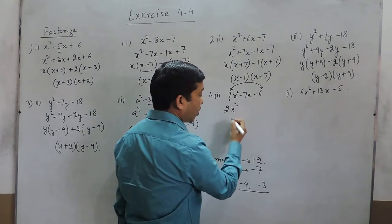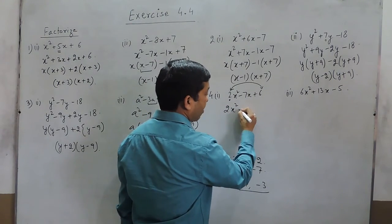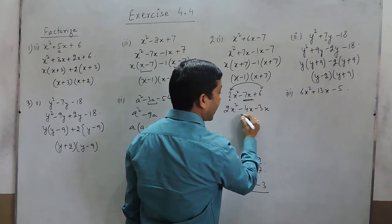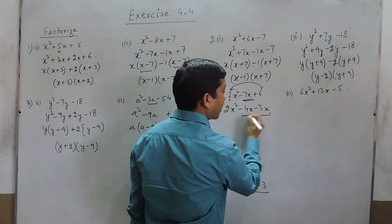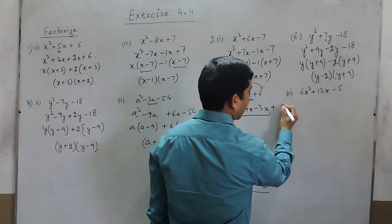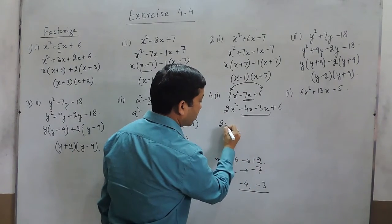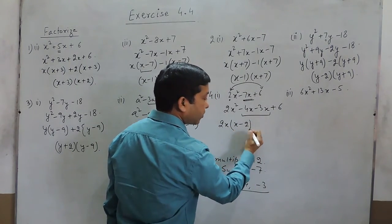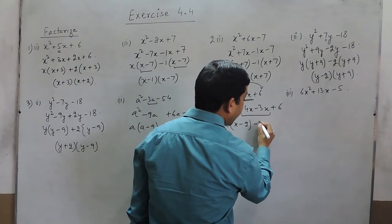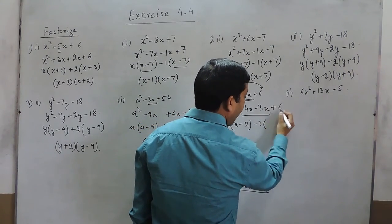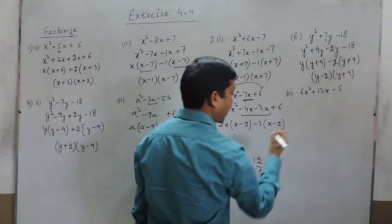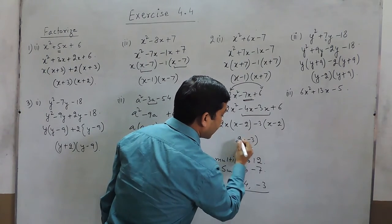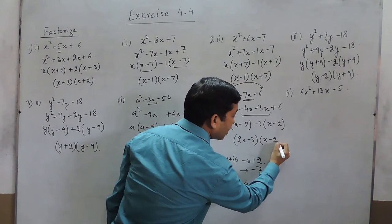So we write 2x squared minus 4x minus 3x plus 6. Taking 2x common in the first two terms gives x minus 2, and taking minus 3 common in the last two terms also gives x minus 2. So the two factors are 2x minus 3 and x minus 2.